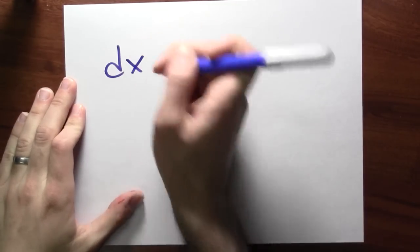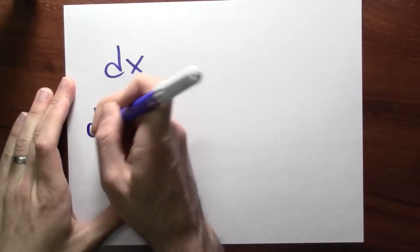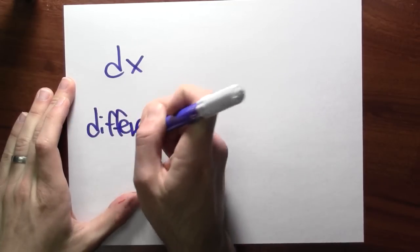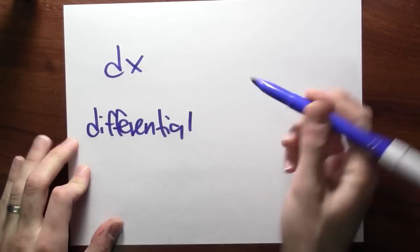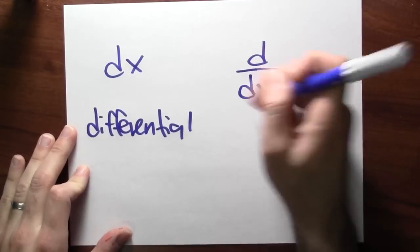We've seen df/dx and we've seen d/dx, so now we're going to think about just dx. This sort of object is called a differential. And I'm really going to emphasize I'm talking about dx, not d/dx, right?